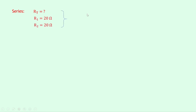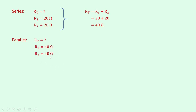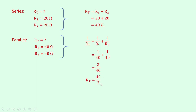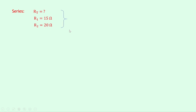Writing down what we know for the first series combination, we're trying to find RT, R1 is 20 ohms and R2 is 20 ohms. So RT equals R1 plus R2 equals 20 plus 20, which equals 40 ohms. Now we do the parallel combination of this answer with the other 40 ohm resistor. RT is what we're trying to find, R1 is 40 ohms and R2 is 40 ohms. So 1 over RT equals 1 over R1 plus 1 over R2, giving 1 over 40 plus 1 over 40, which gives 2 over 40. Flipping both sides gives RT equals 40 over 2, which equals 20 ohms. Since we've got two identical 40 ohm resistors in parallel, we can also do 40 divided by 2 to get 20 ohms. Lastly for our final series combination, R1 is 15 ohms and R2 is 20 ohms, so RT equals 15 plus 20, which equals 35 ohms.